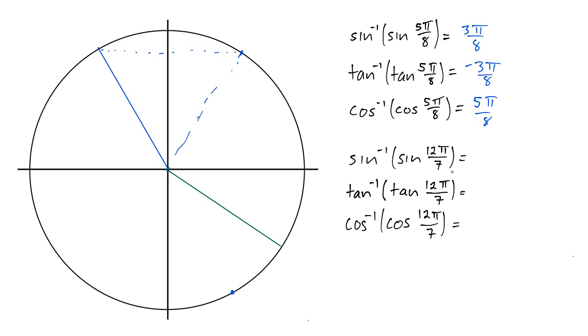And sine inverse of sine of 12π over 7, you might think is just 12π over 7 because we're already in the fourth quadrant. But we need to name the angle in such a way that the angle is between negative π over 2 and positive π over 2. So while we don't have to change the position on the unit circle, we're in the right place, we need to give it the right name.